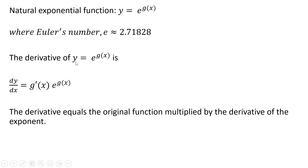The derivative of the natural exponential function is going to be given as follows. The first thing we're going to do is take the derivative of the exponent and put that down in front, and then simply multiply it by the original function. So the derivative equals the original function multiplied by the derivative of the exponent.